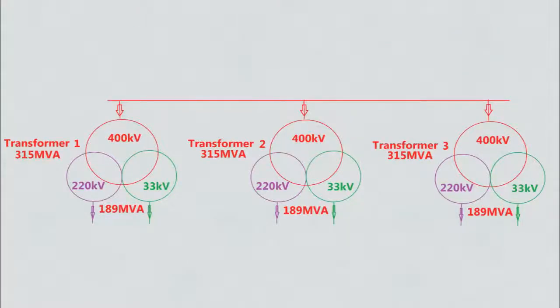Now, with an example let's see how parallel operation of transformers is done. As shown in the diagram, let's consider a substation with 3 transformers each rated 315 MVA and 400/220/33 kV — that is Transformer 1, Transformer 2, and Transformer 3 — all with the same impedance. The 400 kV side is the incoming side and 220 kV and 33 kV are the load sides. Assume all transformers are in service and around 60% loaded, meaning each transformer has 189 MVA load, totalling 567 MVA across all 3 transformers.